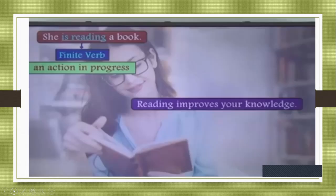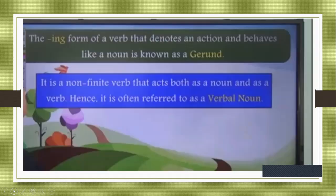'She is reading a book' — here this is continuous tense, so reading is a finite verb showing an action in progress. But if we want to put reading as a subject: 'Reading improves your knowledge' — here reading is what we are talking about, so reading is the subject with the -ing form. It is a gerund. The -ing form of a verb that denotes an action and behaves like a noun is known as a gerund. It is a non-finite verb that acts as both a noun and a verb — hence it is often referred to as a verbal noun, just as participles are referred to as verbal adjectives.